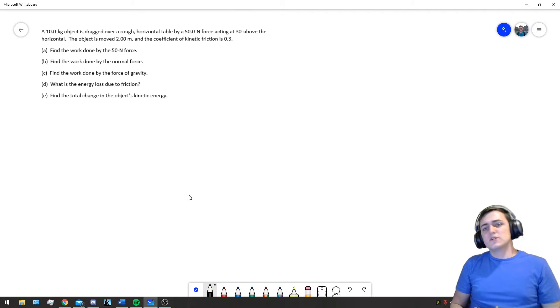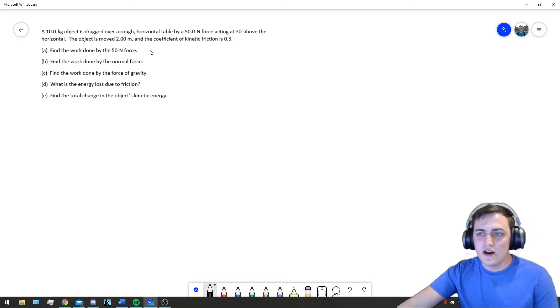So, in this problem, we are told that an object is dragged over a table. It says it's rough. That means that it has friction. The force of 50 N acts at 30 degrees above the horizontal. The object is moved 2 meters, and it has a given coefficient of kinetic friction. And so, part A says,